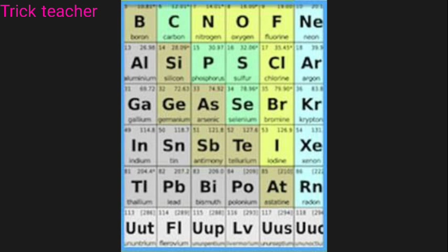Now we have the P-Block elements. Group 13 contains Boron and Gallium. Group 15 contains Nitrogen and Phosphorus. Group 16 contains Oxygen, Sulphur, Selenium, Tellurium, and Polonium. Group 17 contains Fluorine, Chlorine, Bromine, Iodine, and Astatine.